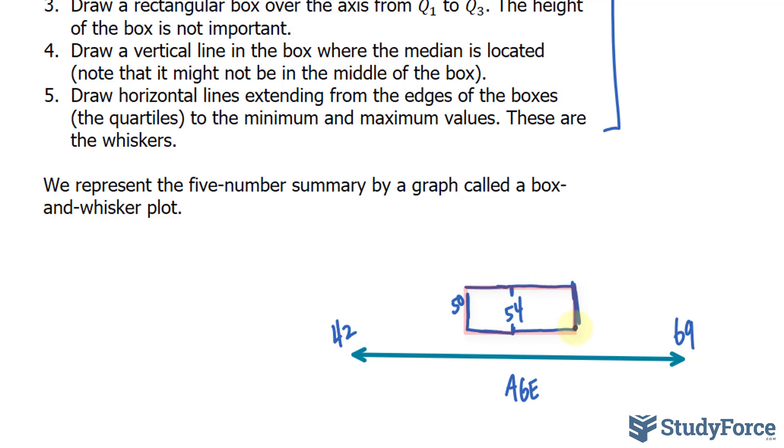So we can say that this represents 60. We then draw horizontal lines extending from the edges of the box. So think of something like that, where this represents 42 and that represents the number 69.